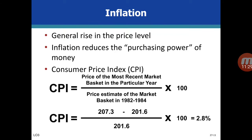Now let's look at inflation. Inflation is the general rise in price level, which reduces the purchasing power of money. To measure inflation, we subtract last year's price index from the current year's price index, divide by last year's price index, and multiply by 100. For example, if last year's index was 27.3 and the current year's is 21.60, prices have gone up by 2.8 percent.